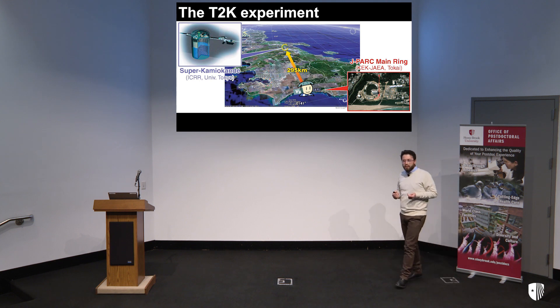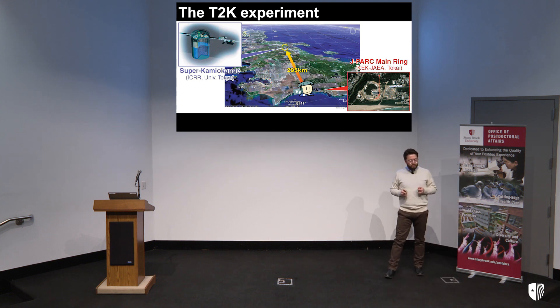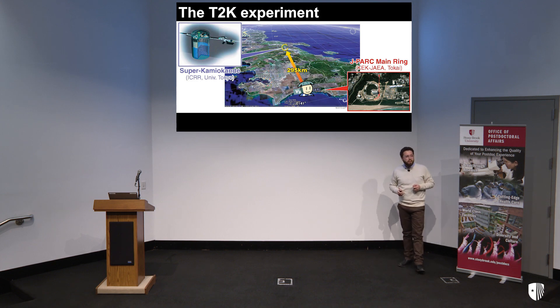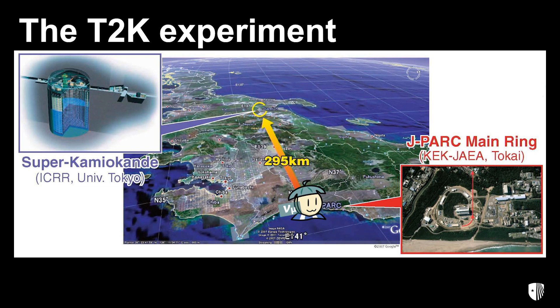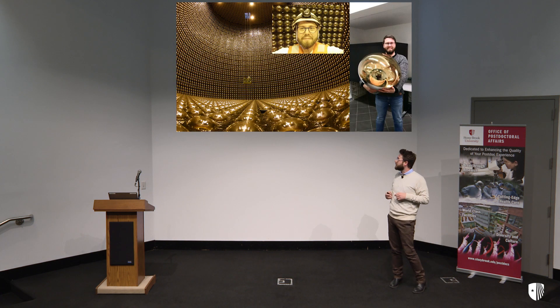One of the experiments investigating this phenomenon is located in Japan and is called T2K, which is the acronym of Tokai to Kamioka — the two cities in Japan where the experimental apparatus is located. Neutrinos travel from the east coast of Japan for about 300 kilometers before being caught by the giant Super-Kamiokande.